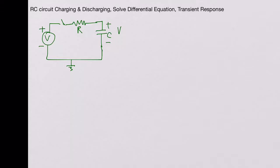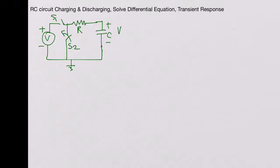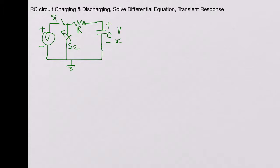Now let's assume that switch S1 is opened and we have another switch S2 which we will now close. So we open S1 and close S2. Our initial condition here is Vc(0) equals V, which is the DC voltage across the capacitor right now — the capacitor has been charged up.